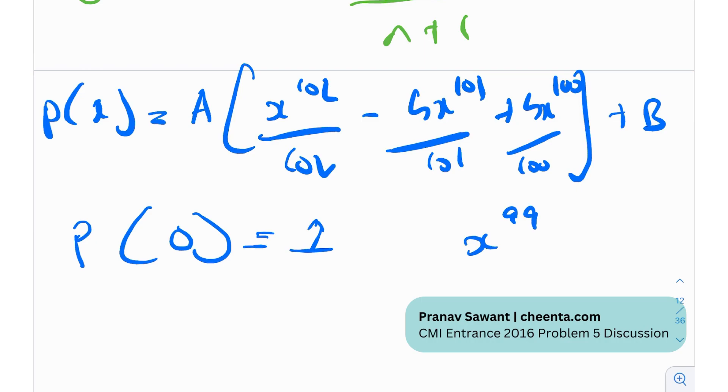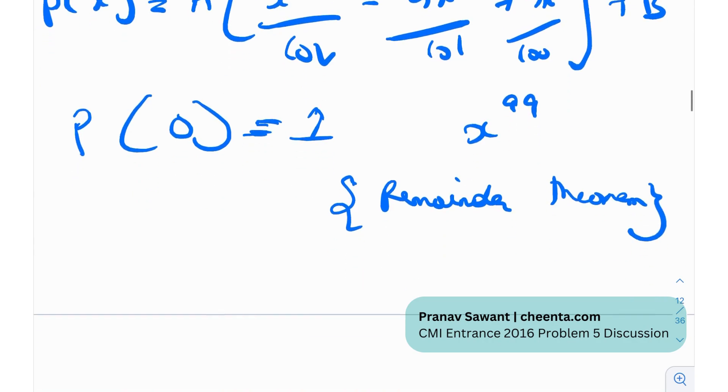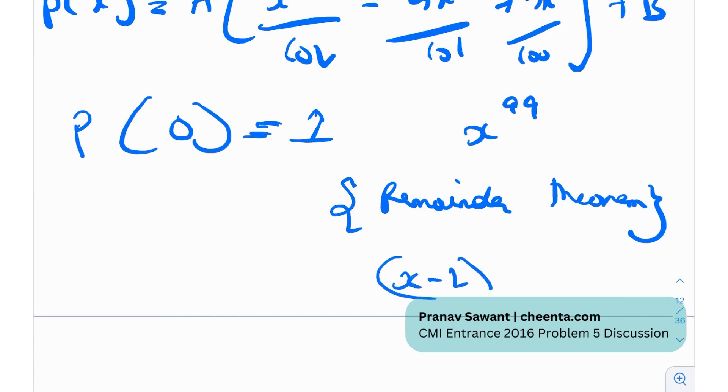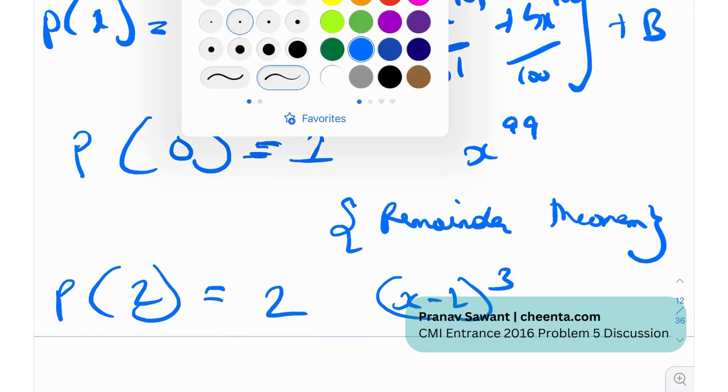Now it is given to us that p of 0 is 1 why because we are dividing it by x to the 99 and using the remainder theorem we essentially put x equal to 0 right this is essentially a little bit of the remainder theorem which you might have maybe looked at earlier right you divide by x to the 99 the remainder is 1 and you divide it by (x minus 2) cubed so you put p of 2 and you get the remainder as 2 so now you have the value of p of 0 and p of 2 and that should be enough to find a and b.